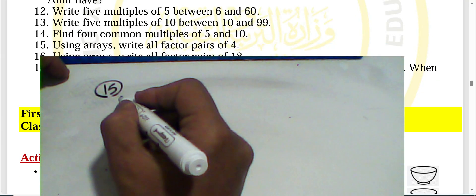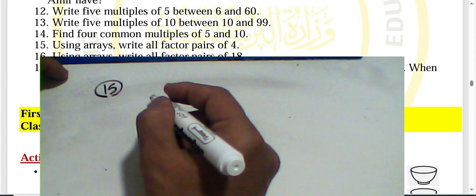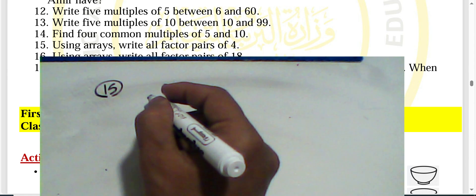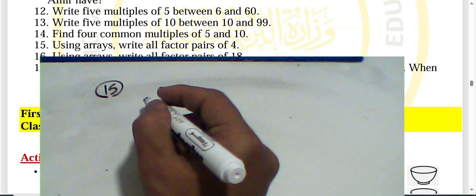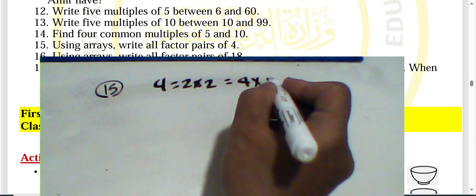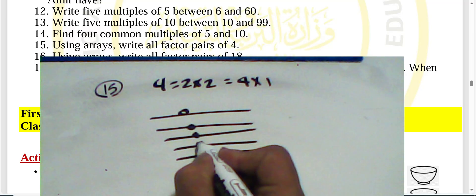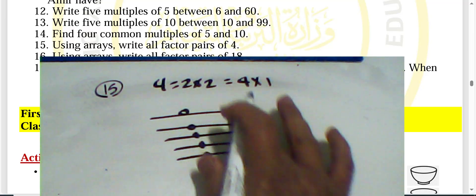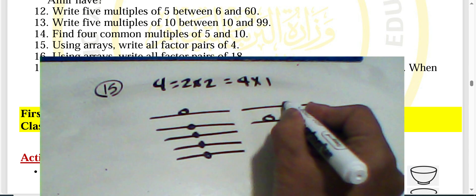Question fifteen: using arrays, write the factor pairs of four. Four can be divided by two, so four equals two times two and four times one. You can draw four rows of one element, or two rows of two elements.